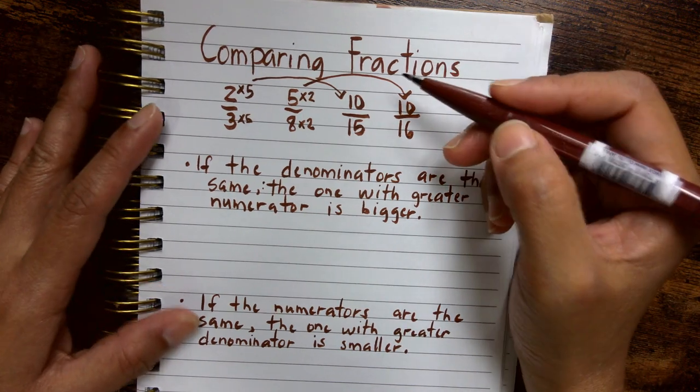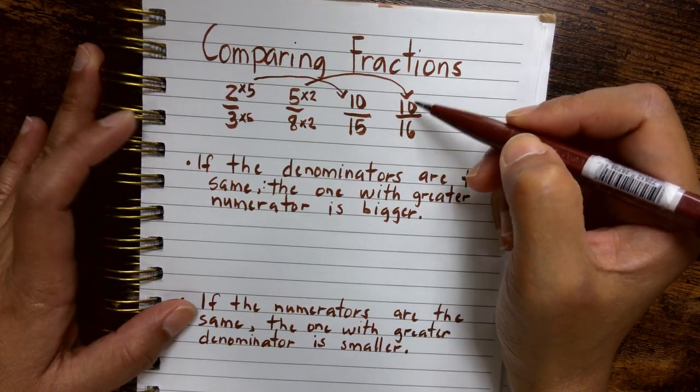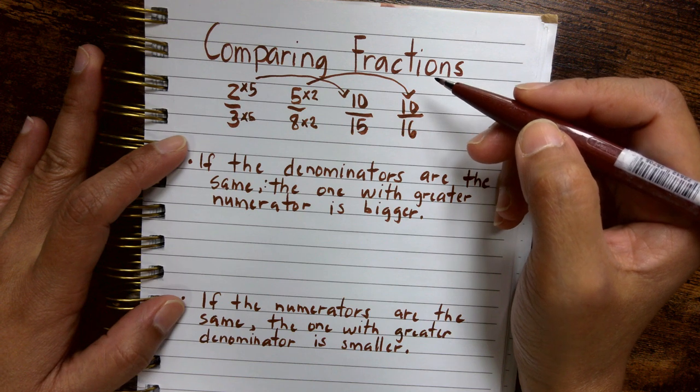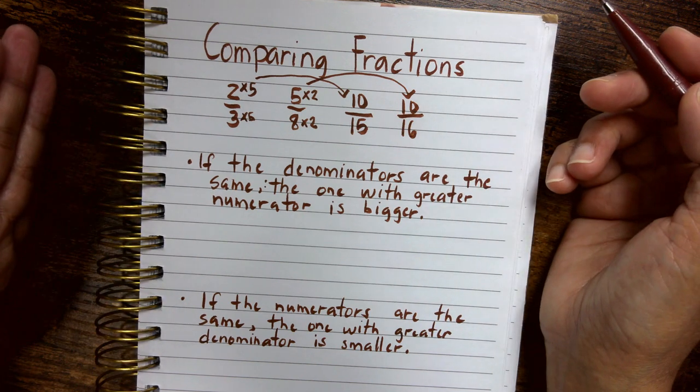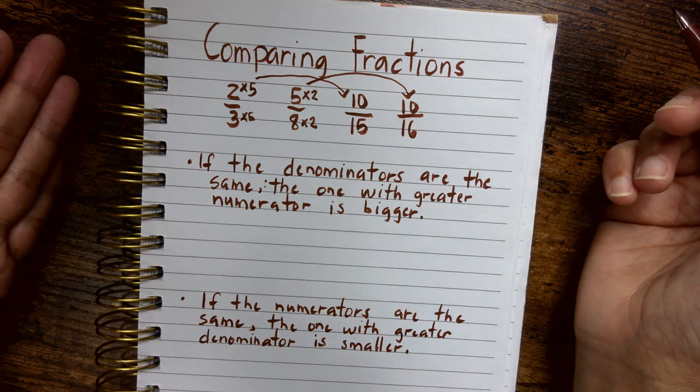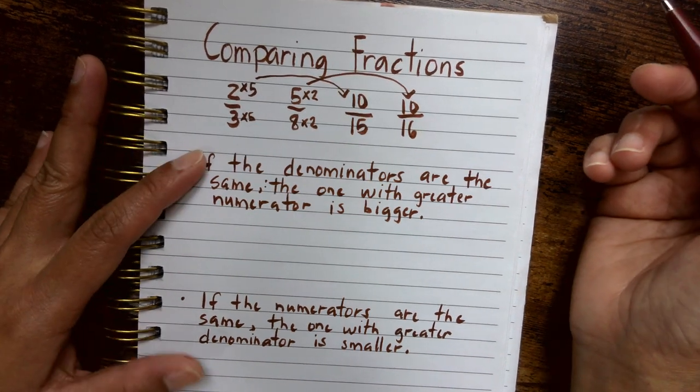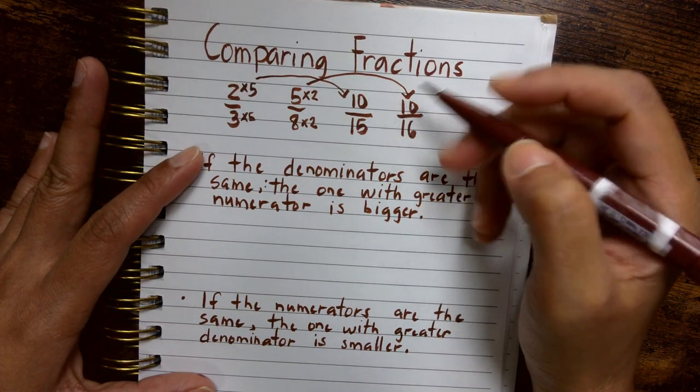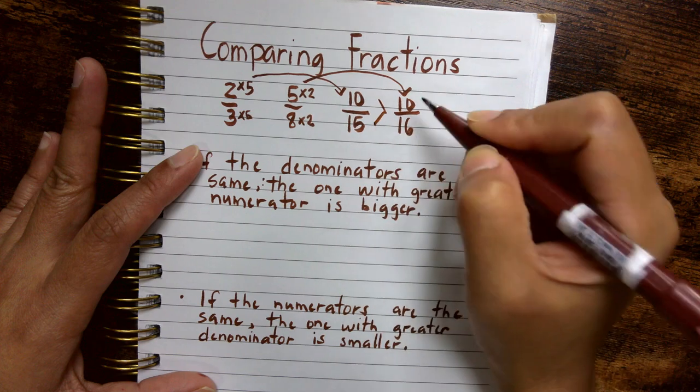And then remember that if the numerators are the same, the fraction with the greater denominator is actually smaller. So therefore we can say that in this case, 10 fifteenths is actually greater than 10 sixteenths.